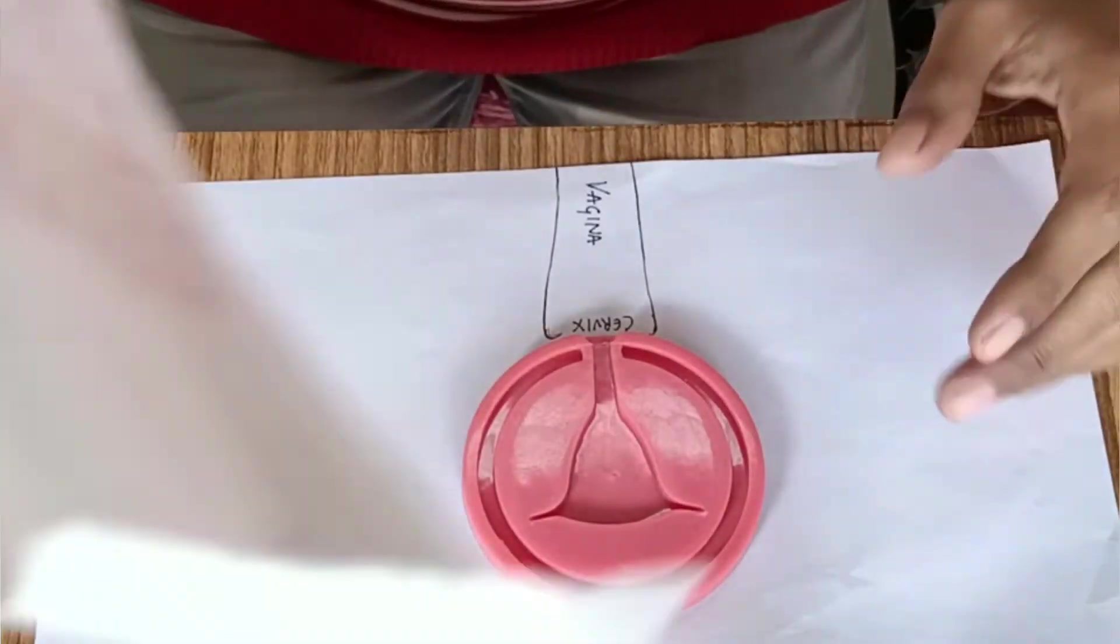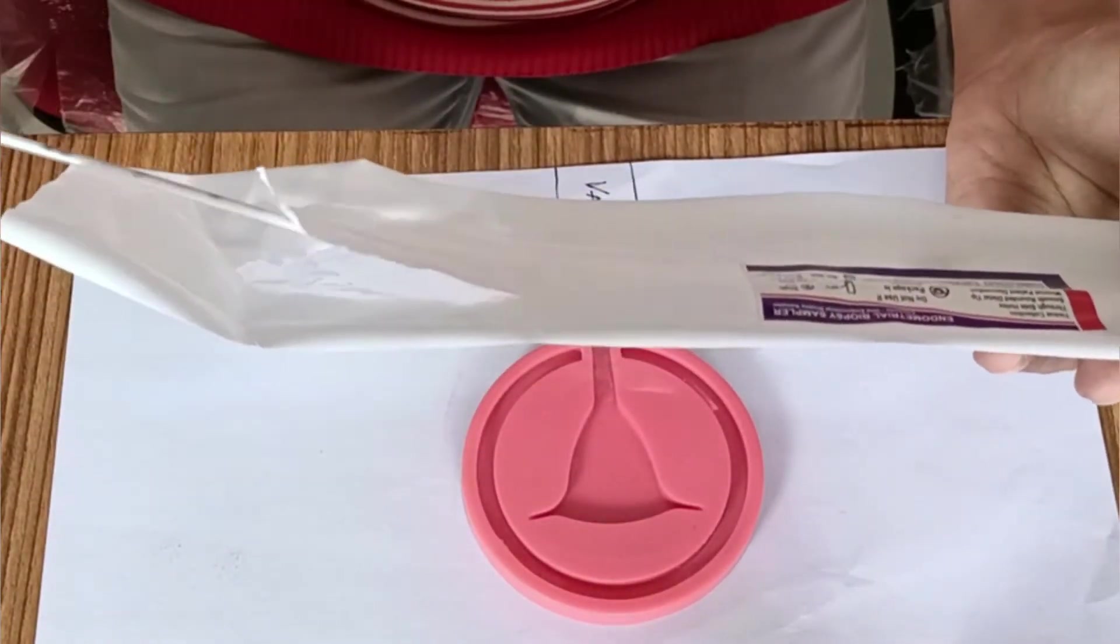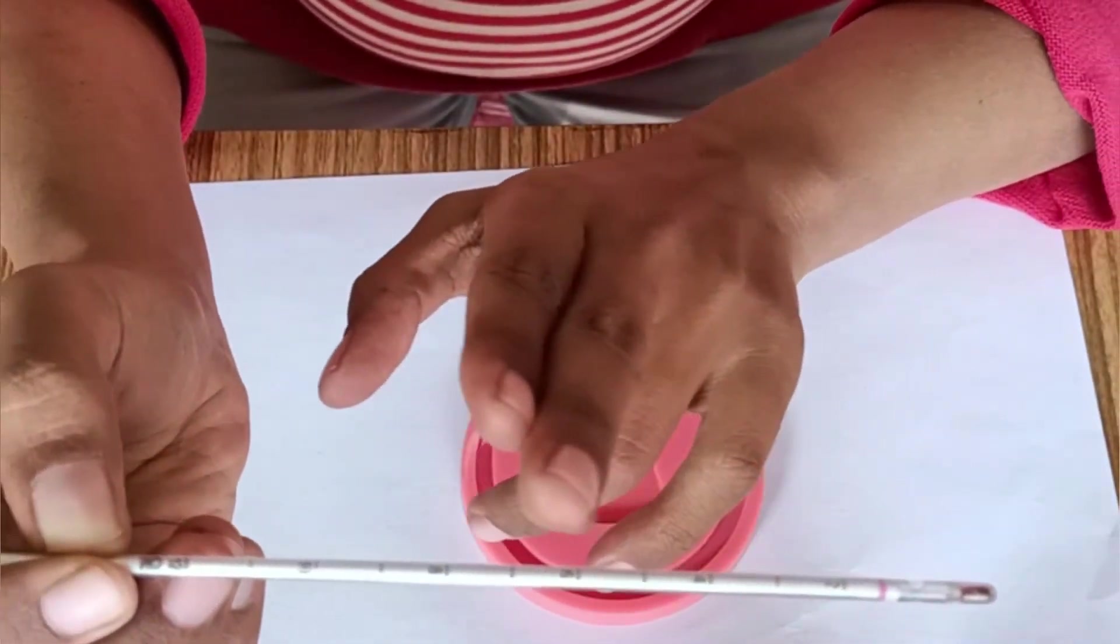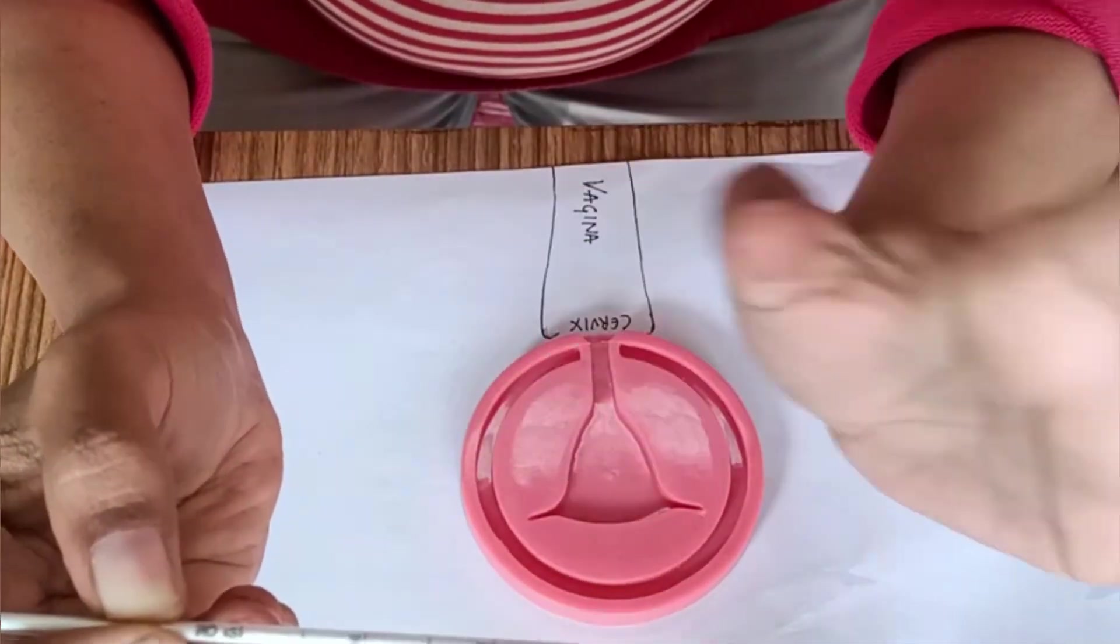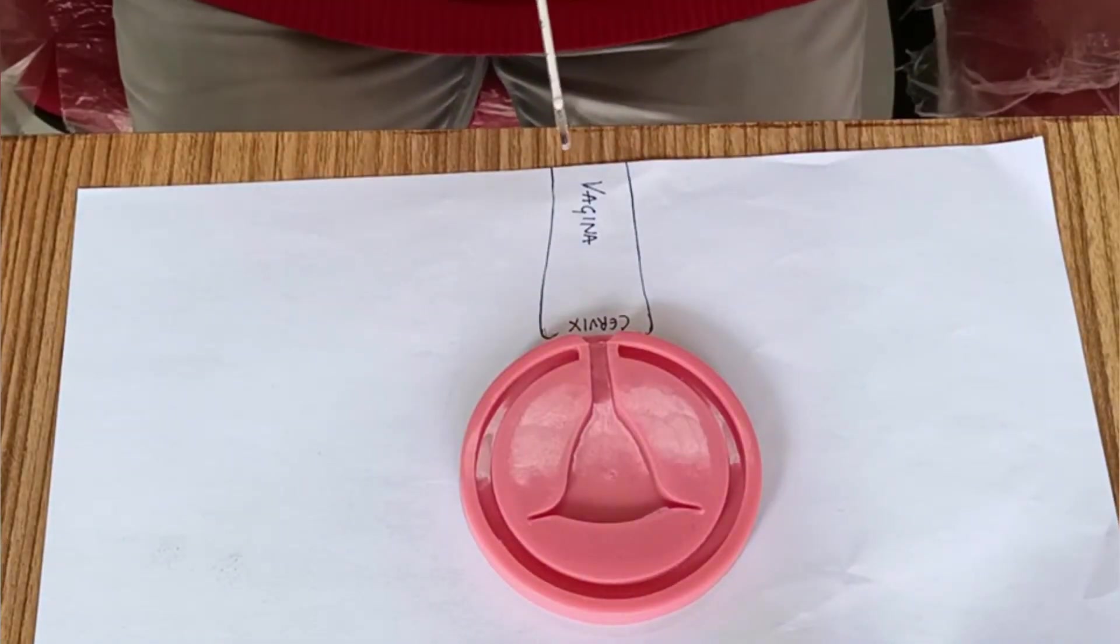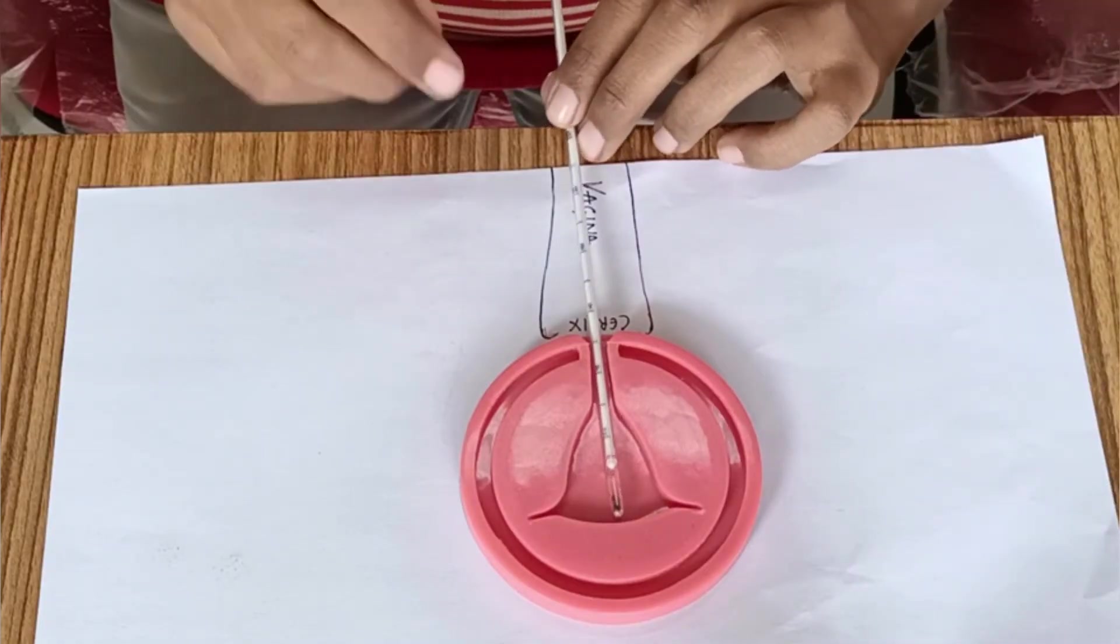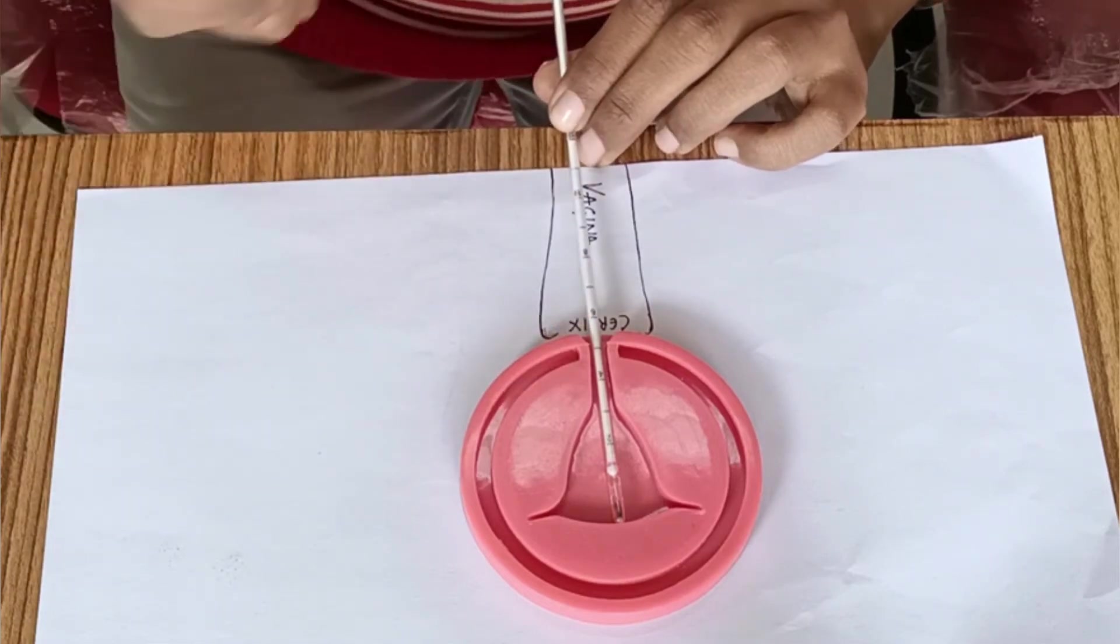So now after the external os is visible, we require the Pipelle to take the endometrial sample. This is a Pipelle, made of plastic, and it is flexible with graduated markings in centimeters till 12 centimeters. We don't need a uterine sound as we can measure the uterocervical length with the same instrument. It has two parts: the cylindrical tube and a stylet. We go through the vagina, cervix, external os, cervical canal, internal os, all the way up till the fundus where you'll feel some resistance. At the external os you can mark the uterocervical length, which in this case is 6 centimeters.